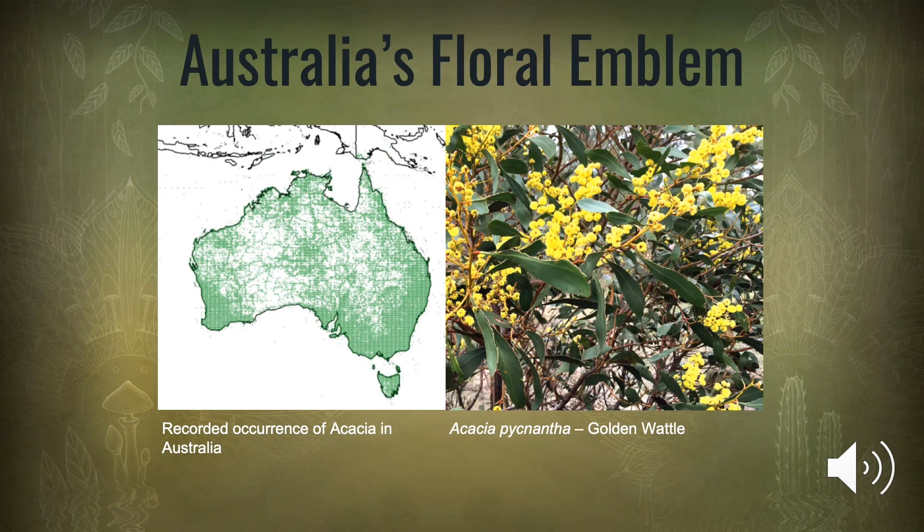There are over 1,300 species of Acacia worldwide, with the majority found naturally occurring across Australia, where they play a prominent role in the country's botanical identity as the largest genus of flowering plant and as the national floral emblem, which is Acacia pycnantha.